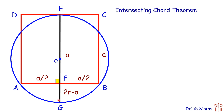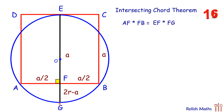As per the intersecting chord theorem, AF times FB equals EF times FG. When two chords intersect, the products of their segments are equal to each other. Putting in the values: AF is A/2, FB is A/2, EF is A, and FG is 2R minus A.